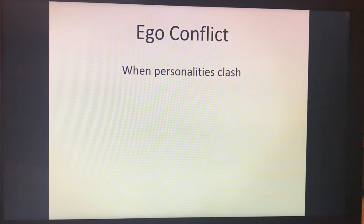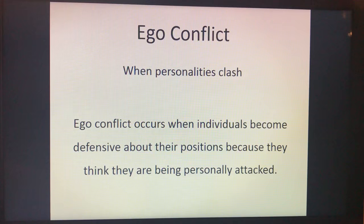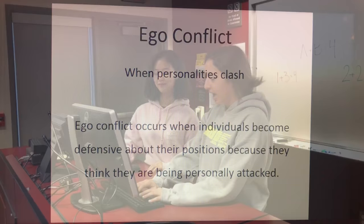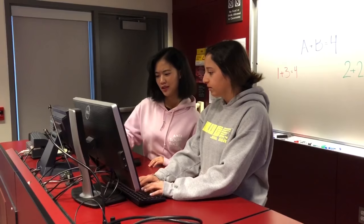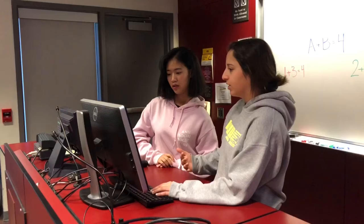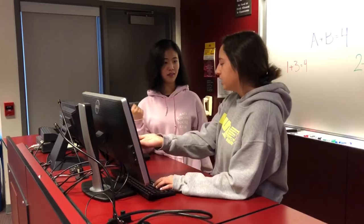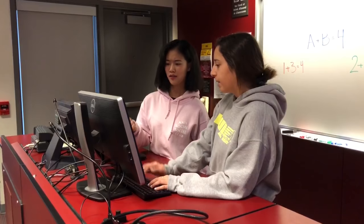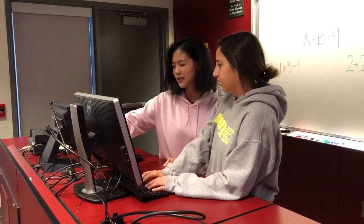Ego conflict: when personalities clash. Ego conflict occurs when individuals become defensive about their positions because they think they're being personally attacked. I'm the writer of the group — I've written all this so far. What do you think? This idea is not good enough for our group. I'm the writer and I speak the best English, so why are you attacking me like that? It's not about the language, it's about the idea. Everyone can contribute ideas. I just don't know why you're attacking me like this.